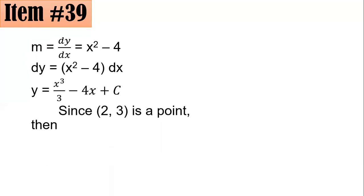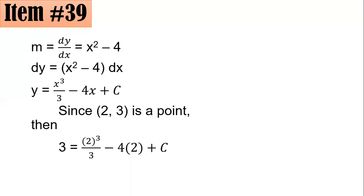The integration gives y equals x cubed over 3 minus 4x plus C, since this is an indefinite integral. The problem states that (2, 3) is a point, so x equals 2 and y equals 3. Substituting: 3 equals 2 cubed over 3 minus 4 times 2 plus C, which gives 3 equals 8/3 minus 8 plus C.